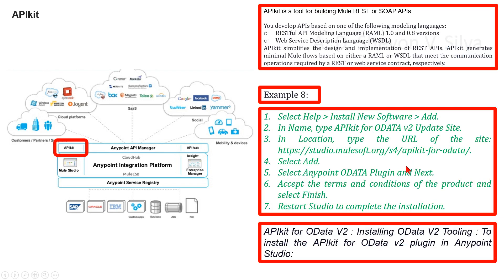Installing OData version 2 tooling in APIkit for OData: to install the APIkit for OData version 2 plugin in Anypoint Studio: 1) select Help then Install New Software then Add; 2) in Name, type 'APIkit for OData version 2 update site'; 3) in Location, type the URL of the site: https://studio.mulesoft.org/s4/api-kit-for-odata; 4) select Add; 5) select Anypoint OData plugin and click Next; 6) accept the terms and conditions and select Finish; 7) restart Studio to complete the installation.